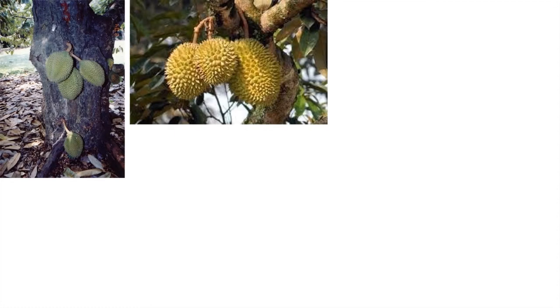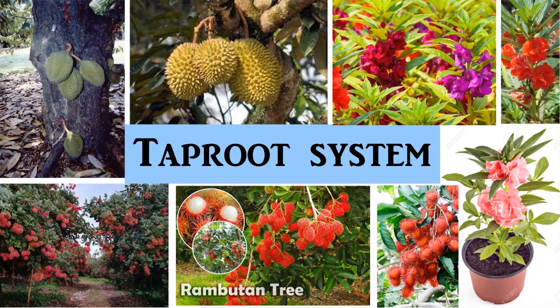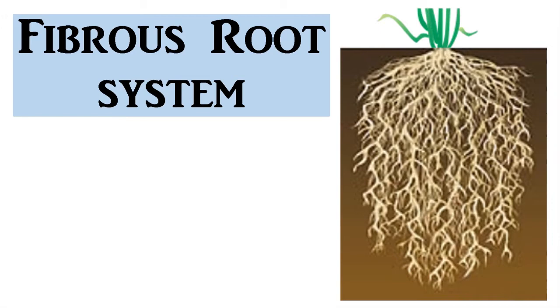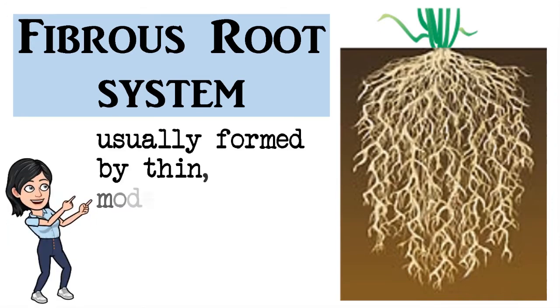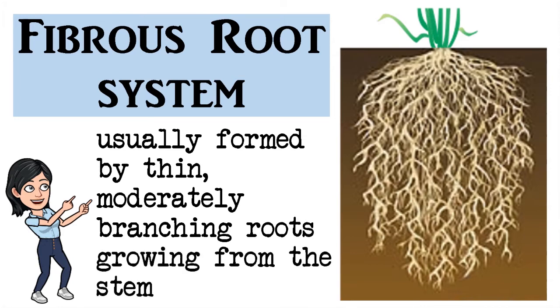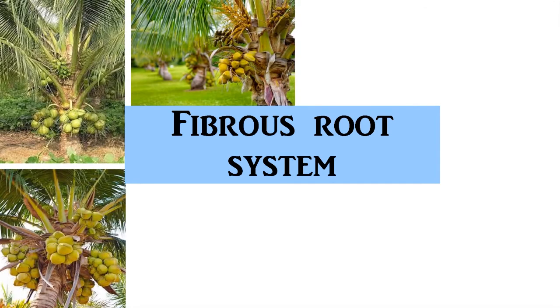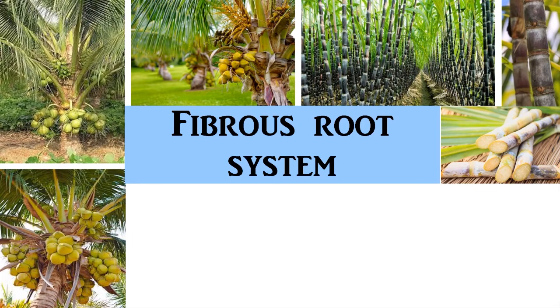Durian trees, rambutan trees, and balsam plants are examples of plants with a taproot system. A fibrous root system is usually formed by thin, moderately branching roots growing from the stem. There is no main root. Some examples of plants with a fibrous root system include coconut trees, sugarcane plants, and corn plants.